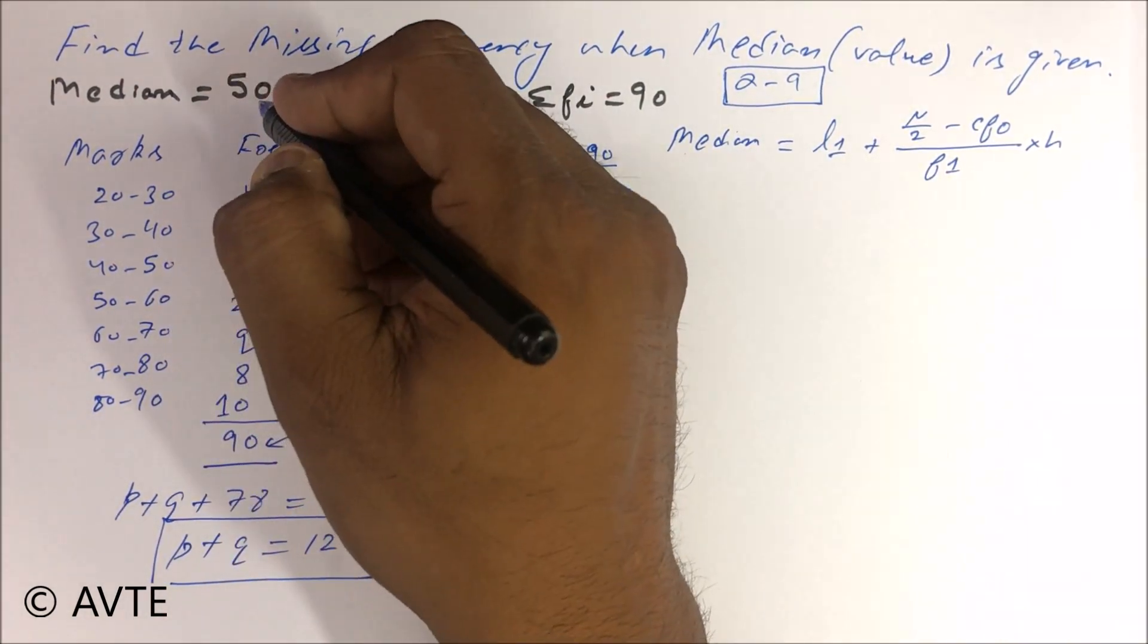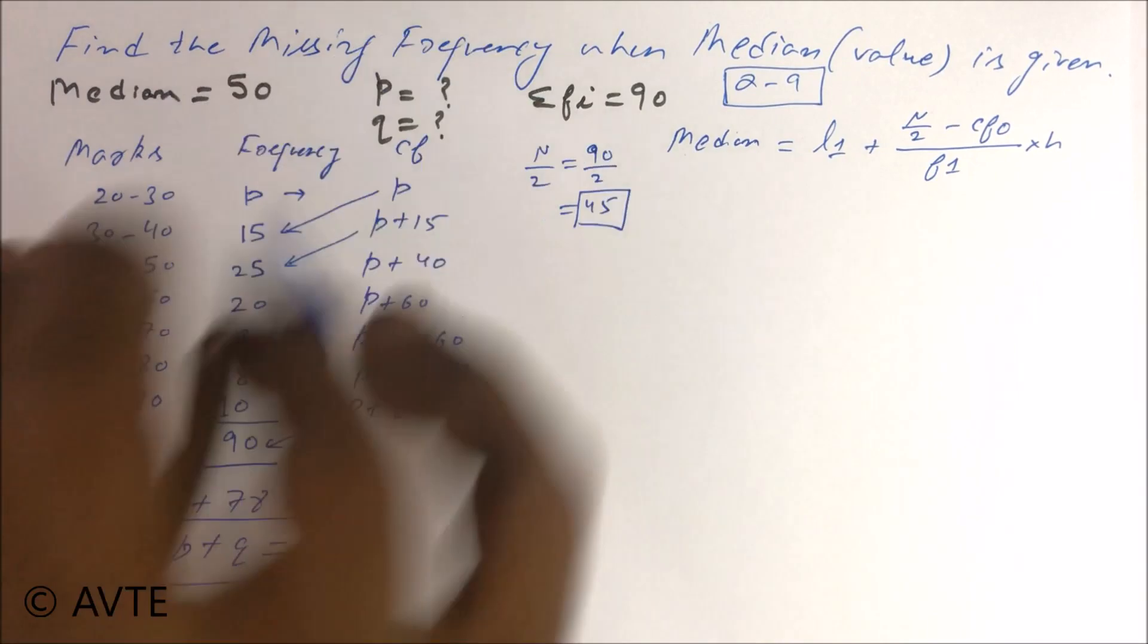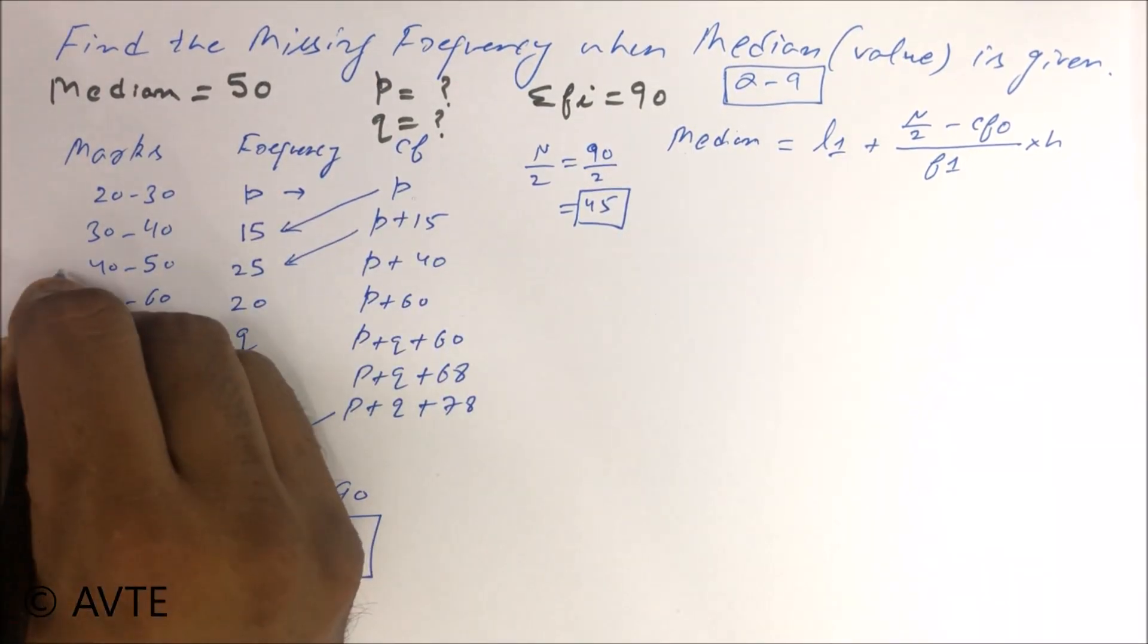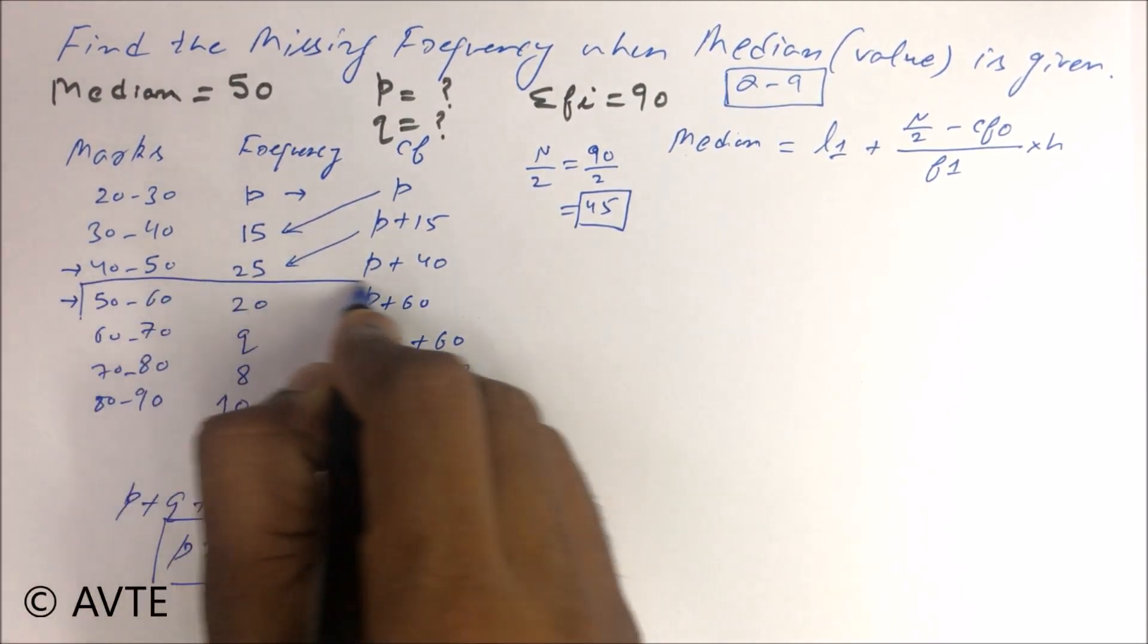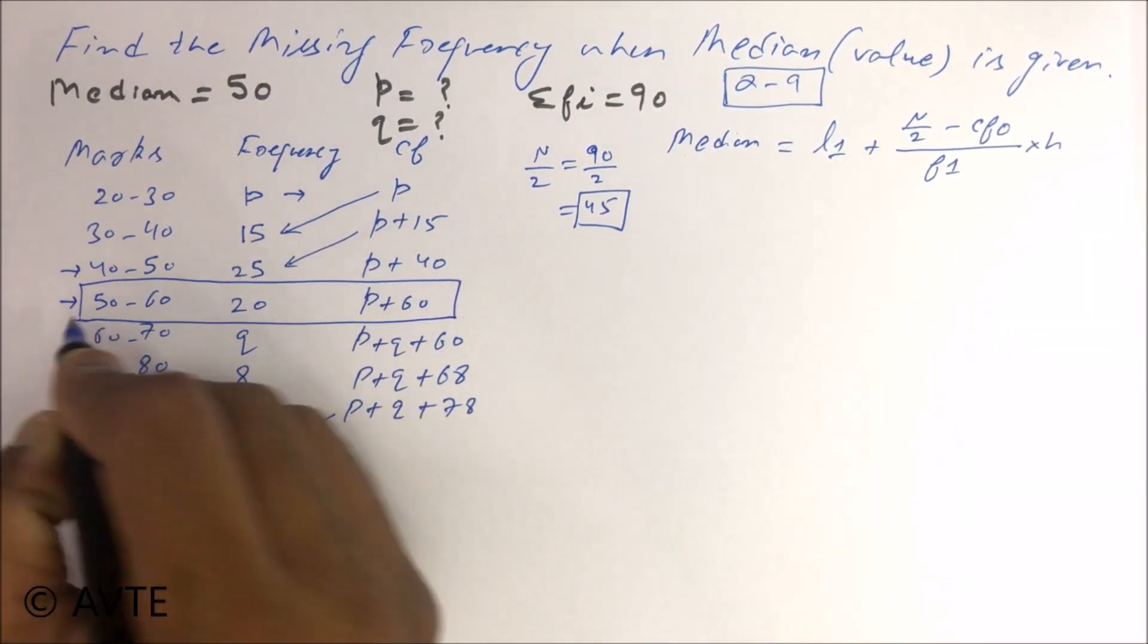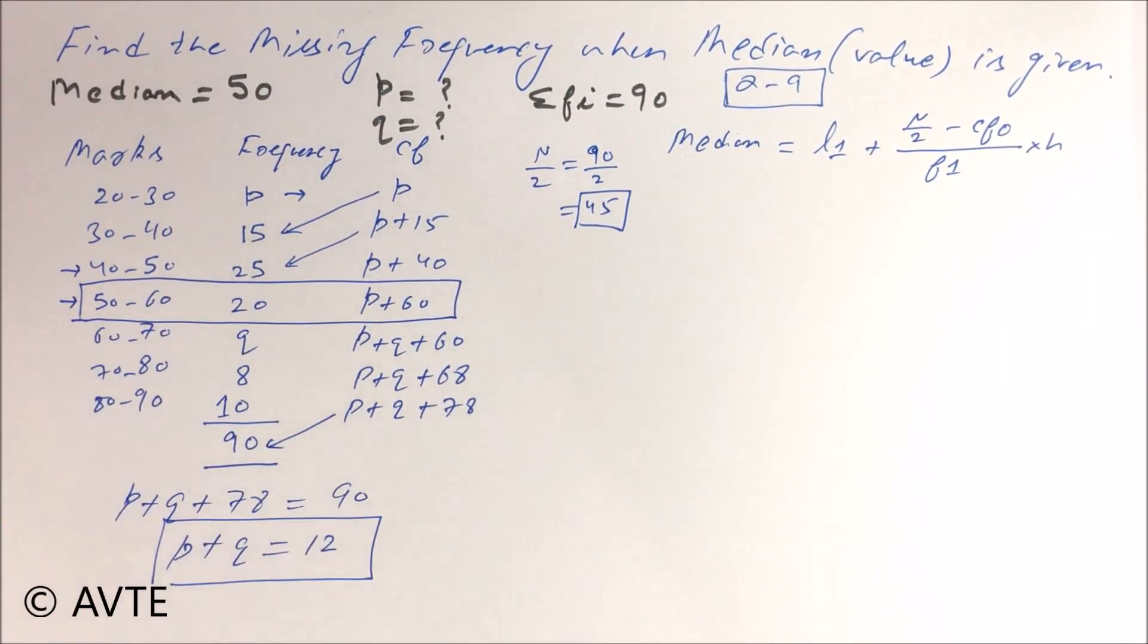But the answer is 50, so your median lies in either this or this or this. Your median class is 50 to 60 because 50 counts here.